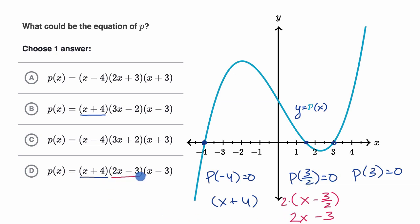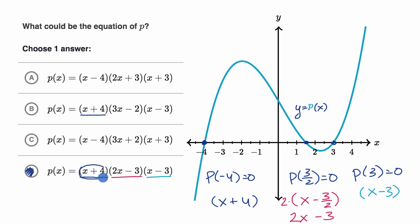We have a two x minus three right over there. So choice d is looking awfully good. Let's verify it with the last one: for p of three to be equal to zero, we could have an expression like x minus three in the product, because that equals zero when x is equal to three. And we indeed have that right over there. So choice d is correct. When x equals negative four, x plus four equals zero, making the whole product zero. When x equals three halves, two x minus three equals zero. And when x equals three, x minus three equals zero — zero times something times something is equal to zero.